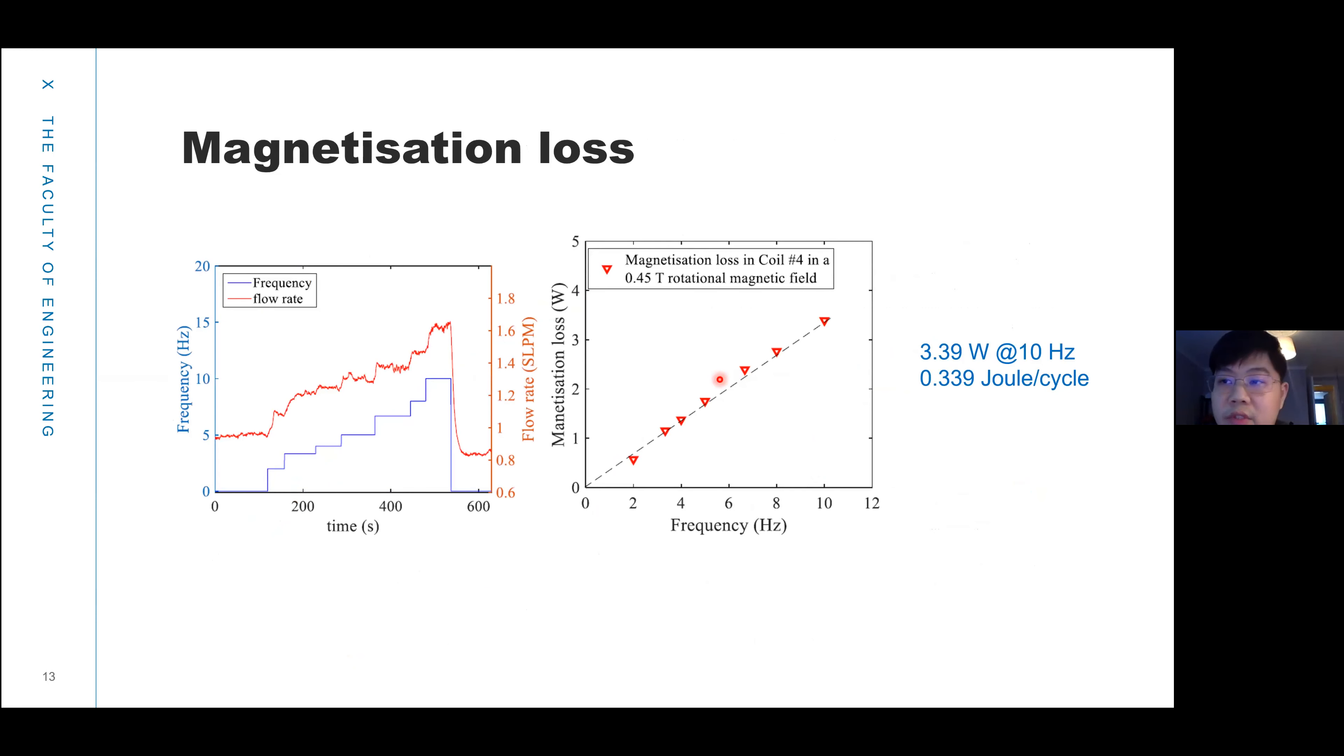Here is the magnetization loss of the 3S coil. We can find when we increase the applied frequency, the flow rate increases, and we calculate the AC loss inside the coil. We found this coil is 3.39 watts at 10 hertz. This is a little bit higher than the normal 4 millimeter tape because we used some solder in the 3S coil and it will cause the magnetization loss to increase. In the future, we can improve the design of this coil by reducing the solder used in the wire, and we can reduce the magnetization loss for the 3S coil.